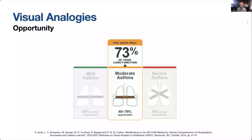A visual analogy is a way to systematically compare two concepts, where one concept is familiar and one is unfamiliar, through the use of graphics or visualizations. Here's an example of visual analogies trying to communicate lung functioning for people with asthma — you can see a belt squeezing a pair of lungs, which is used as an analogy to describe the bronchoconstriction experienced by these patients. The familiar concept is the belt tightening, and the unfamiliar concept is bronchoconstriction.